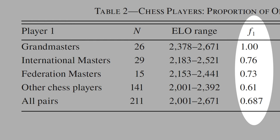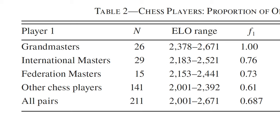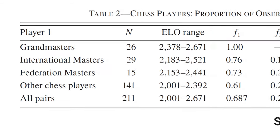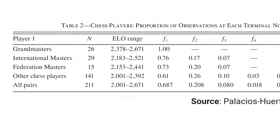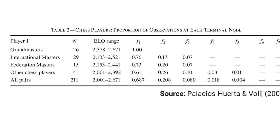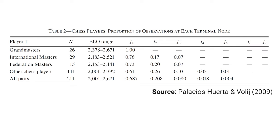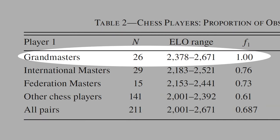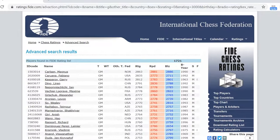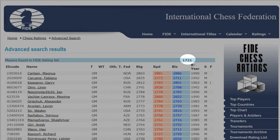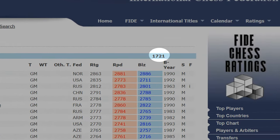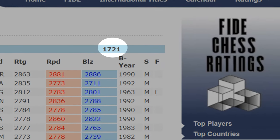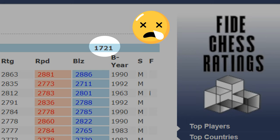Overall, these results are very interesting. Behavioral economics describes several situations where people deviate from rationality, including people from MBA programs at Harvard, MIT, and Stanford, and students of statistics, math, and computer science. But this paper found a subpopulation that does behave rationally. Unfortunately, according to the International Chess Federation, there are only 1,721 grandmasters on a planet of almost 8 billion people.